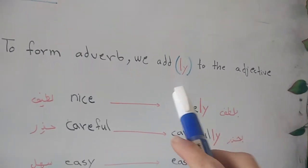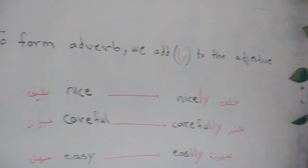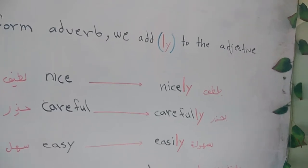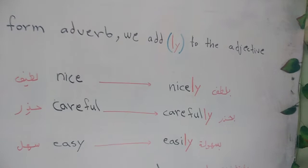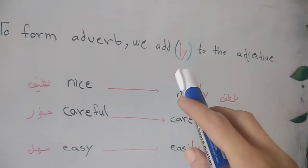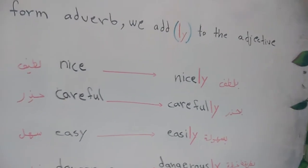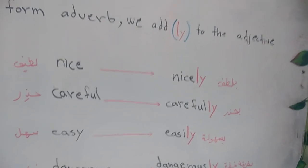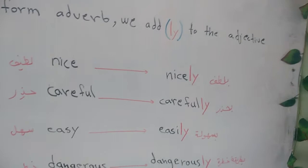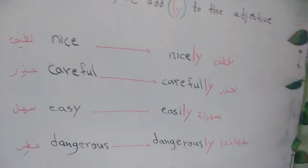من هدول المفروض فهمنا إنه أنا بضيف الـ y للأجكتف — للصفة. عندي صفة عادية، مثل: nice، careful، easy، dangerous، beautiful — هدولها adjectives، صفات عادية بتوصف الأسماء. كيف بدي أحول هاي الصفة تتحول لـ adverb؟ بضيف لها الـ y. بمسك الصفة وبضيف عليها الـ y — بتتحول لـ adverb. Not always, but usually.